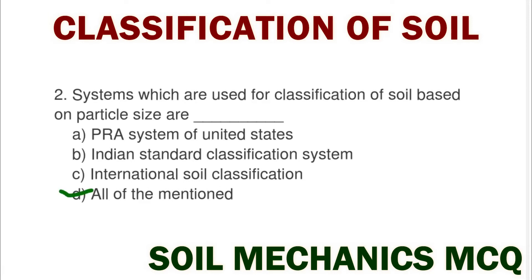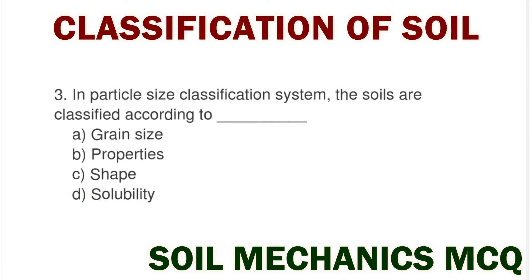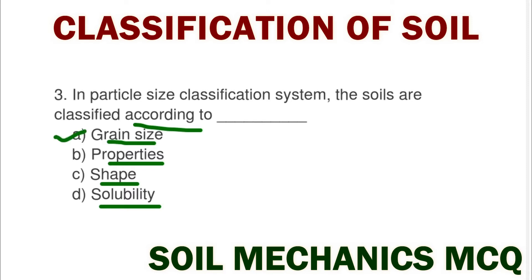The correct answer is option D all of mentioned. Next question: in the particle size classification system, soils are classified according to option A grain size, option B properties, option C shape, option D solubility. The correct answer is option A grain size.